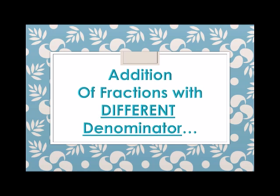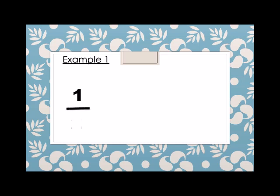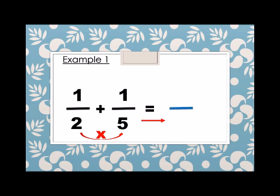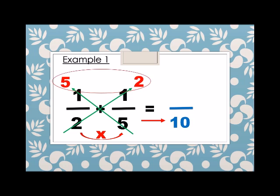Next, addition of fractions with different denominators. This time, the denominator is not the same. Example number 1, we have 1 half plus 1 fifth. As you can see, the denominator is different. So what do we do? We multiply. 2 times 5 is 10, so the denominator of the answer is 10. And then we cross multiply: 2 times 1 is 2, and 5 times 1 is 5. We simply add: 5 plus 2 is equals to 7. Therefore, 1 half plus 1 fifth is equals to 7 over 10.